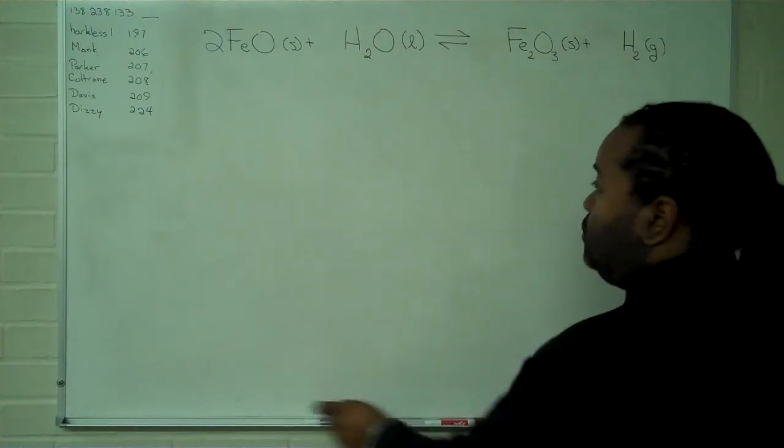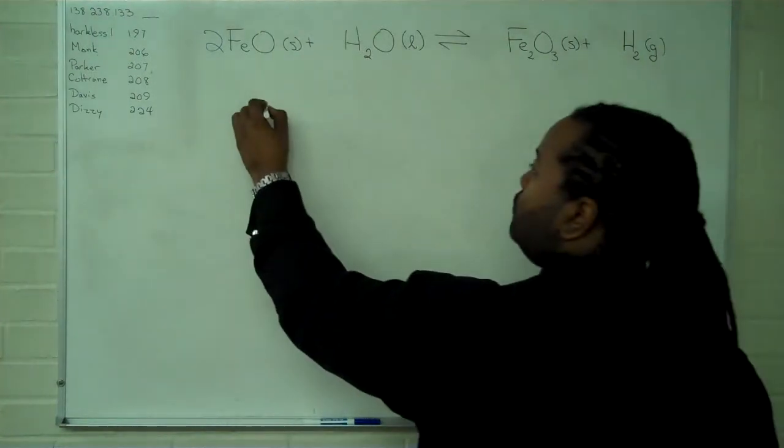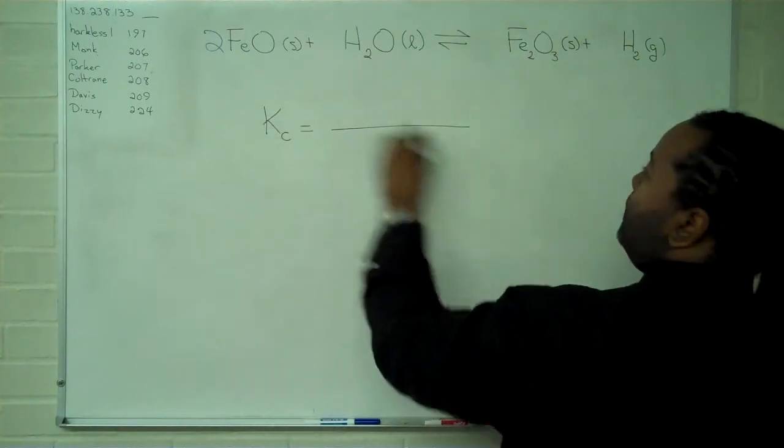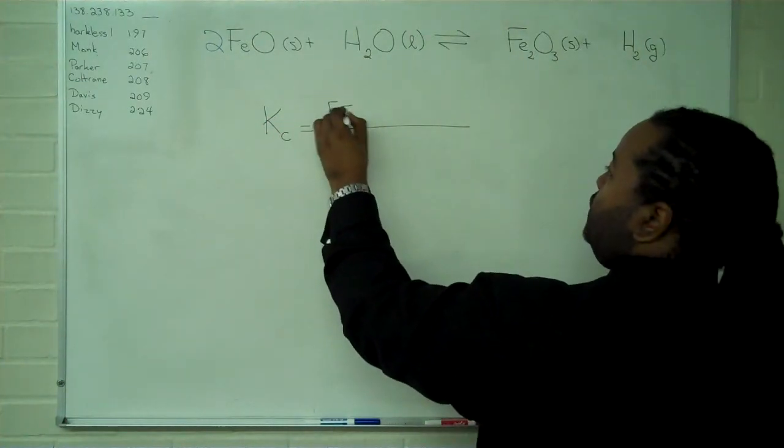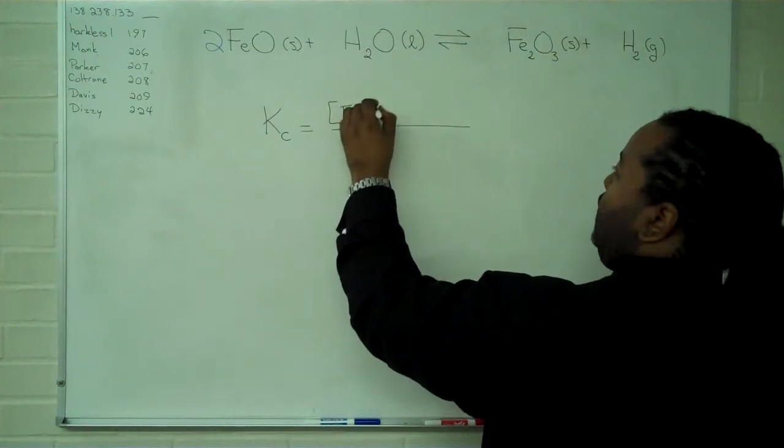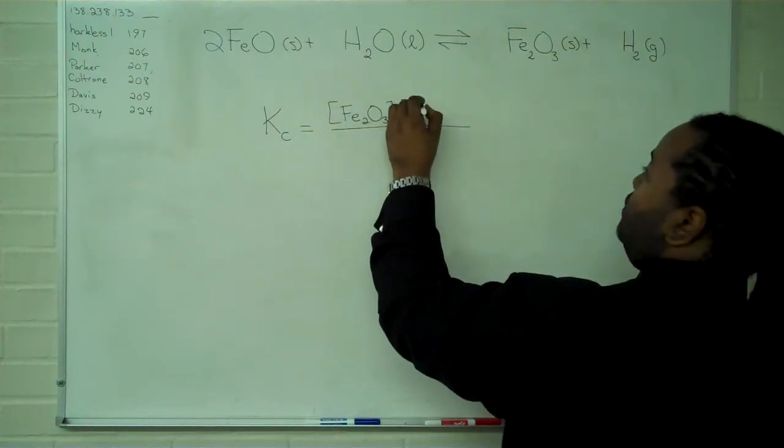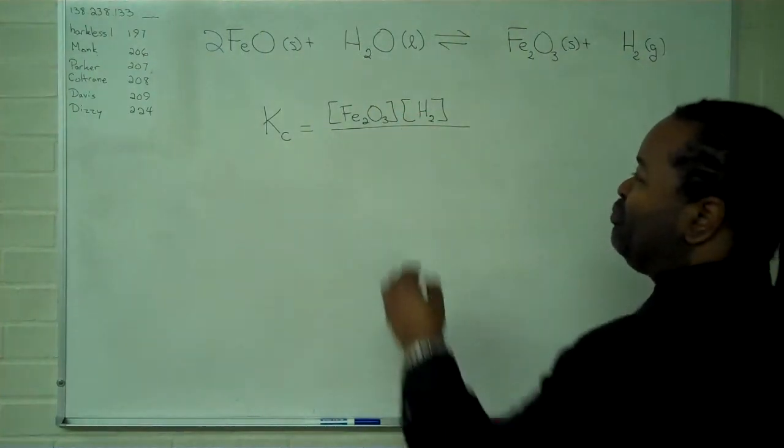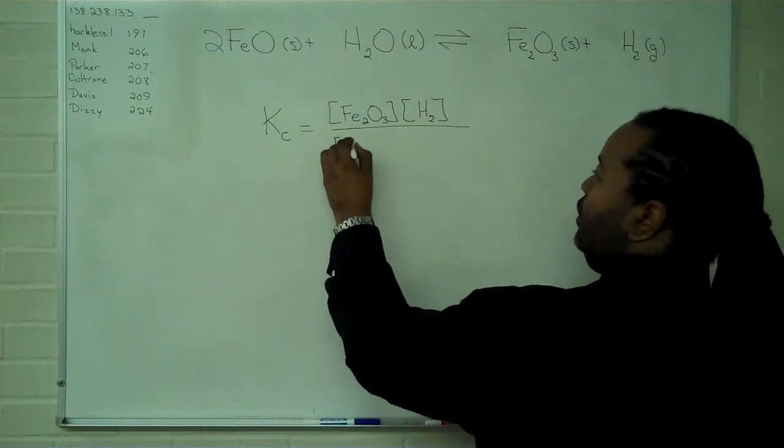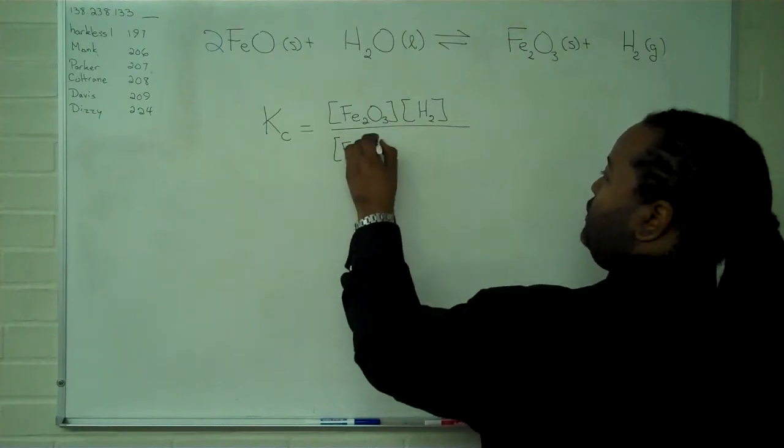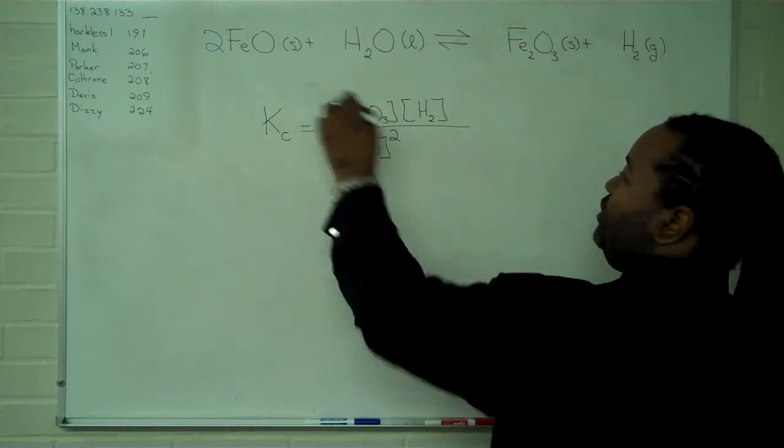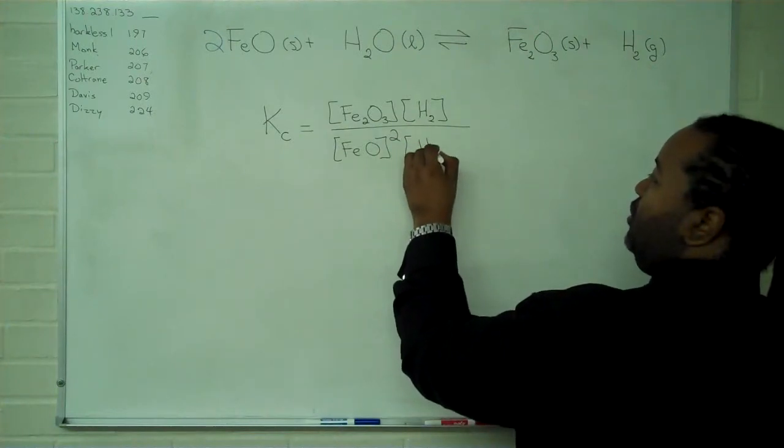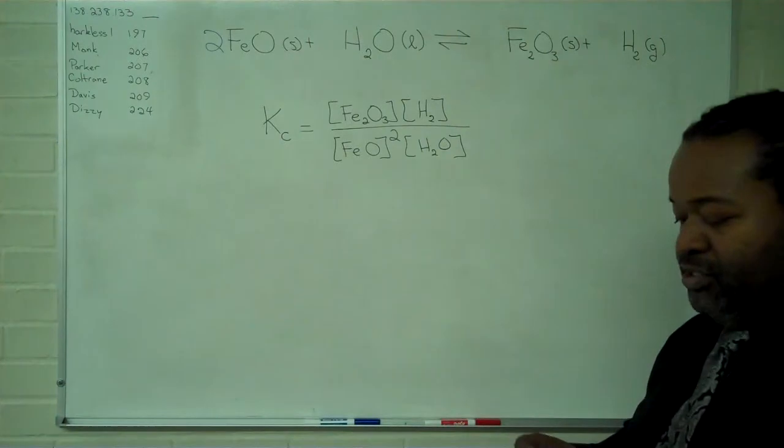we can write out the equilibrium constant expression. Our iron oxide concentration and our hydrogen gas concentration go up top. Our iron two oxide concentration will need to be squared because of the coefficient there. And our water remains put.